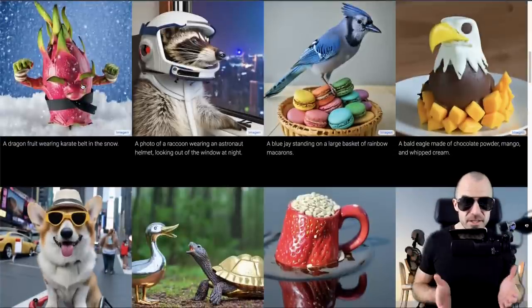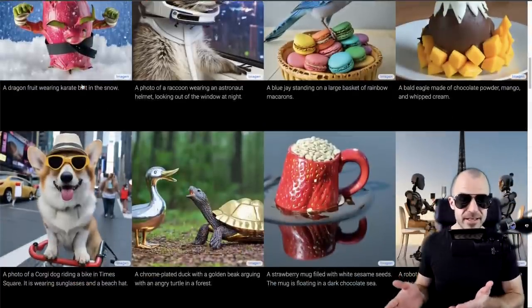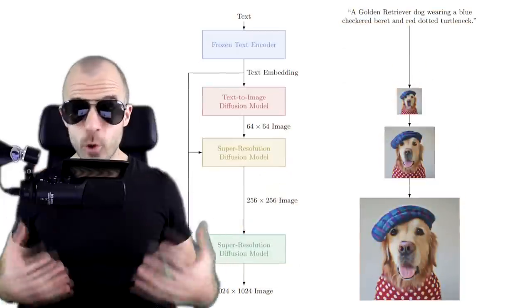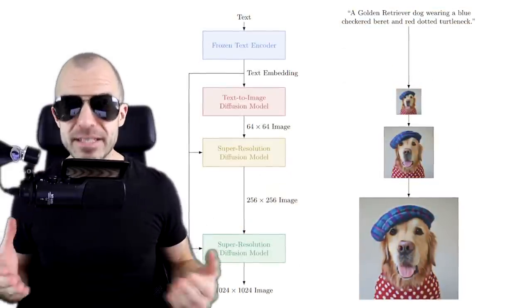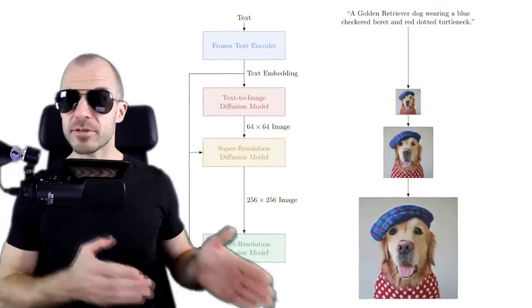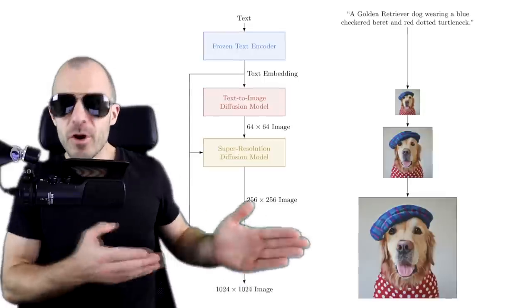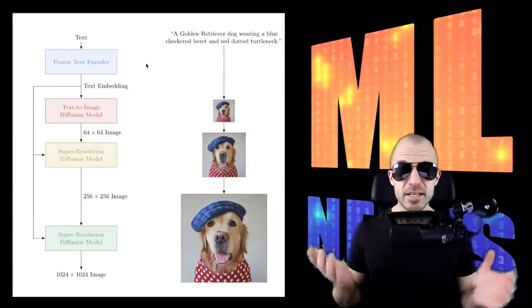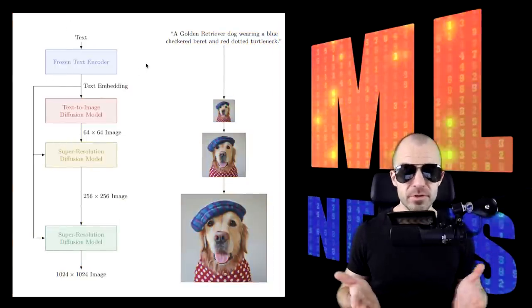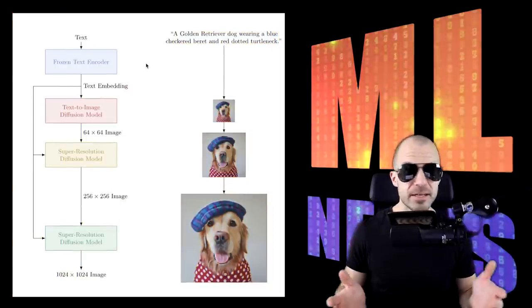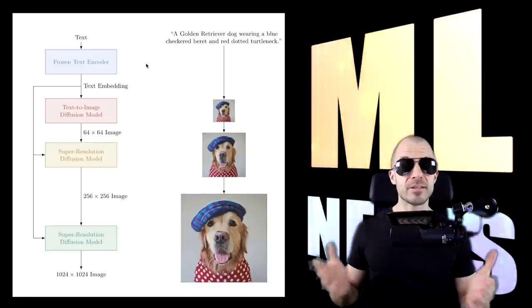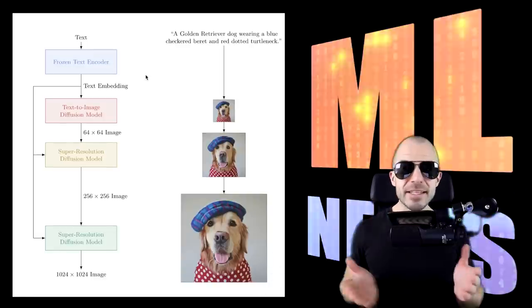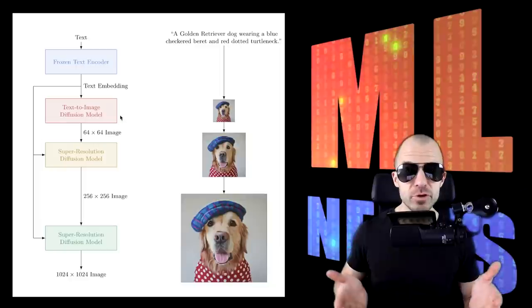Look at the quality of these things — the adherence to text is quite amazing. What's also stunning is the simplicity of these models; we see a continued progression from more complicated systems to actually less complicated systems. The entire Imagen system is captured in a single diagram. At the beginning, you have text going into a frozen text encoder that isn't even trained with the model — it's used as-is from being trained as a pure text model.